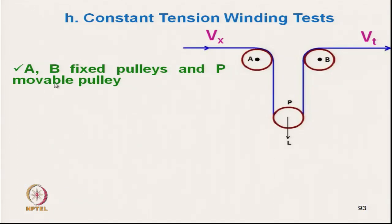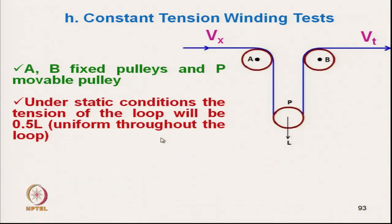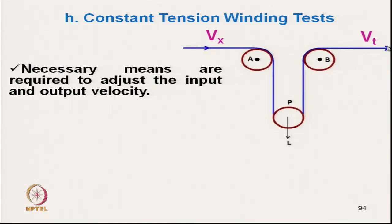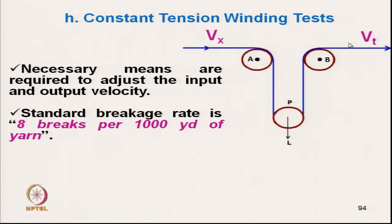That is why it is important to know the strength in running conditions. AB are the fixed pulleys, P is the movable pulley. Under static condition, the load is divided into 2 equal parts. When tension is imposed, it gets stretched by E. So the speed is basically input speed multiplied by (1 + E). We have to arrange some means so that it can take care of the stretchability. The standard breakage rate is 8 breaks per 1000 yards.